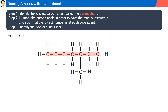We can number it from left to right, or we can also number it from right to left. Next, we need to identify which numbering system — from left to right (red) or from right to left (blue) — would make our substituent or branch have the lowest number. The branch is found at the bottom. In the left-to-right numbering scheme, the branch is at carbon five, while from right to left, the branch is found at carbon three. Therefore, we will use the right to left.